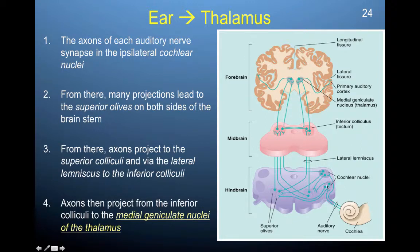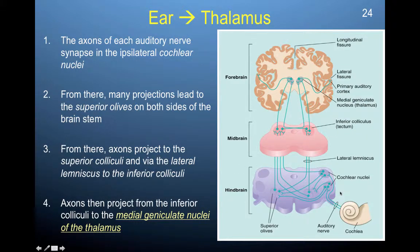From the cochlear nuclei, many projections lead to the superior olives — you have them on both sides. And then from there, axons project to the superior colliculi. So it goes from the cochlear nuclei to the superior olives, and then from the superior olives to the inferior colliculi via the lateral lemniscus.